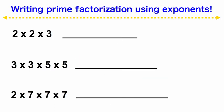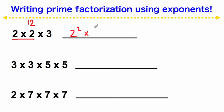You can write prime factorization using exponents, and we'll practice this more in class — you won't do it in your homework tonight. So if we have 2 times 2 times 3, let's figure out what number this is the prime factorization of. Well, 2 times 2 is 4, and 4 times 3 is 12. So this is the prime factorization of the number 12. Because we have two 2s, we write 2 to the second power — that second power represents the number of 2s we have — and then times 3, because we only have one 3.